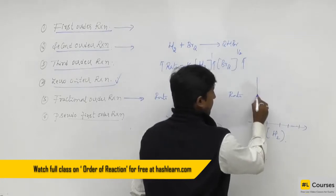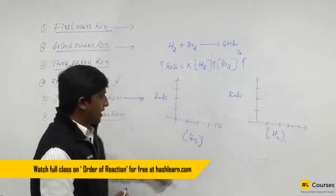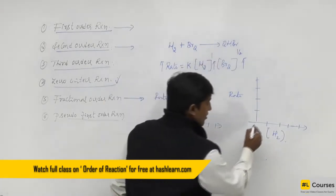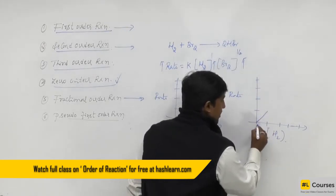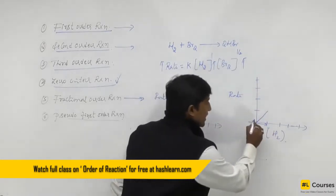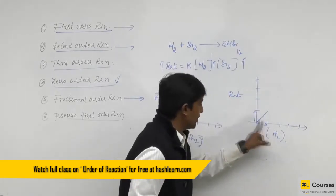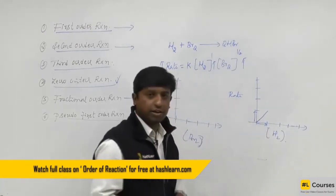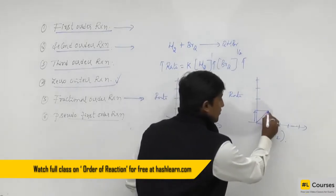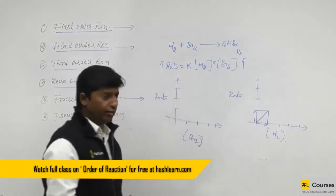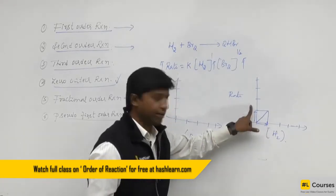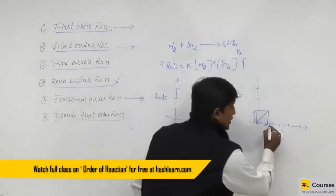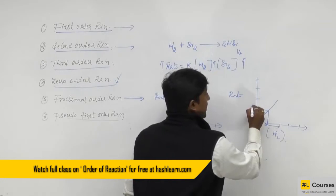Now, with respect to hydrogen, the order of the reaction is 1. When the concentration of hydrogen is increased by 1 unit, the rate increases by 1 unit — you can see from the graph, from point to point it is 1 unit. When the concentration of hydrogen is increased by 1 more unit, the rate increases by 1 more unit. Hence the order of the reaction with respect to hydrogen is 1.